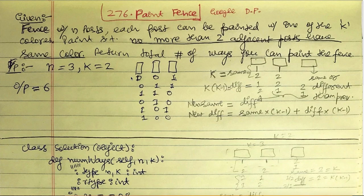We can see that whenever we move from one post to the next, there are two choices: we can use the same color (like 0-0) or a different color (like 0-1). Similarly for the third pillar. This gives us two main concepts in this question: we use two variables, same and diff, to account for this pattern.